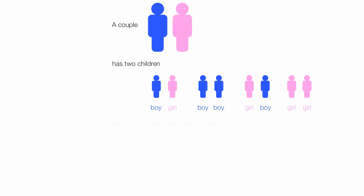And the question is what is the probability that both children are boys knowing that at least one of the children is a boy?